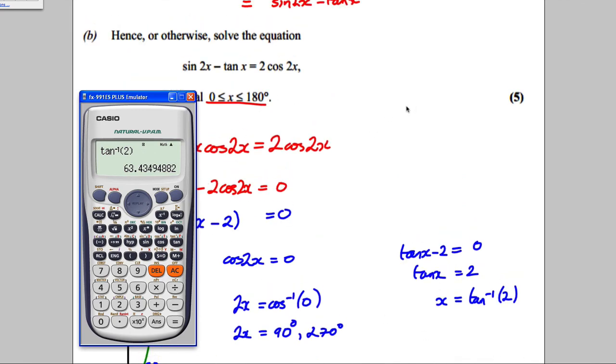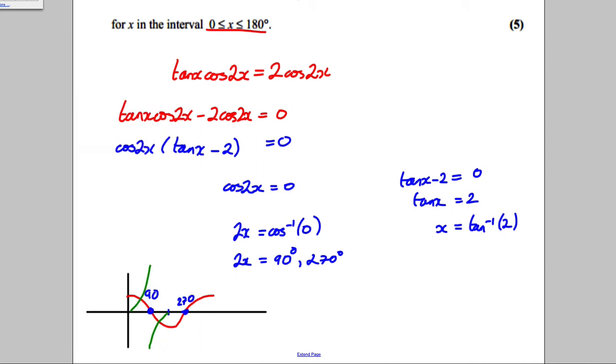So, does it say what decimal places? No, it doesn't. So, just put 63.4 for that. So, x is 63.4.